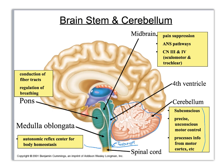You should all remember that the foramen magnum is the hole that goes through the base of the occipital of your skull. When you look at the spinal cord versus the brainstem you'll notice there's a dimensional change — this is narrower than this, it's fatter up in here. This section of the brainstem right here is called the medulla oblongata.